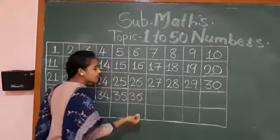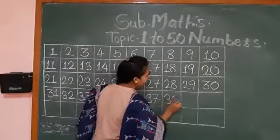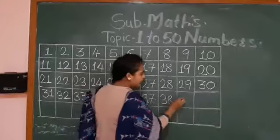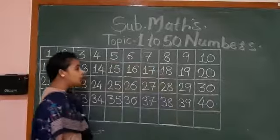Three tenth six, thirty-six. Three tenth seven, thirty-seven. Three tenth eight, thirty-eight. Three tenth nine, thirty-nine. Four tenths, forty.